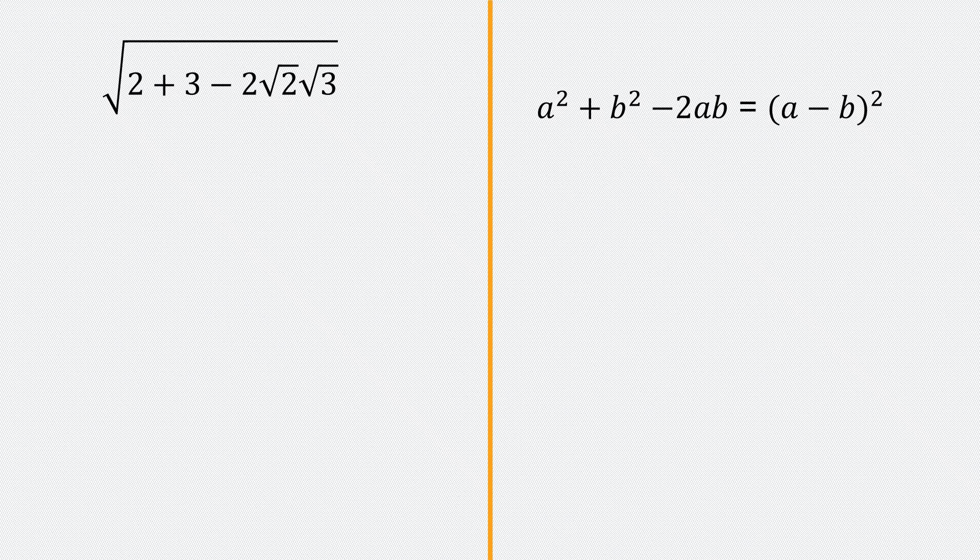So now that we have this in the form a squared plus b squared minus 2ab, we can rewrite it as a minus b squared, where a is root 2 and b is root 3, since a squared is 2 and b squared is 3. So now let's do that. I have the square root of the square root of 2 minus square root of 3 all squared.